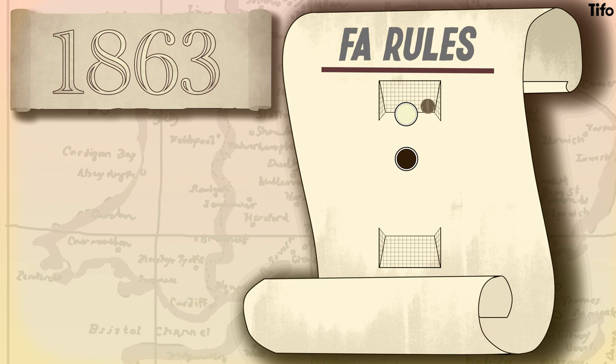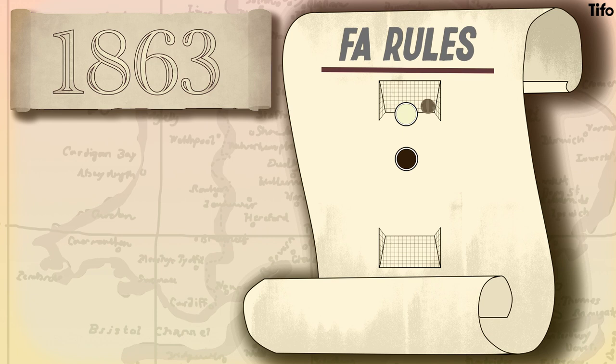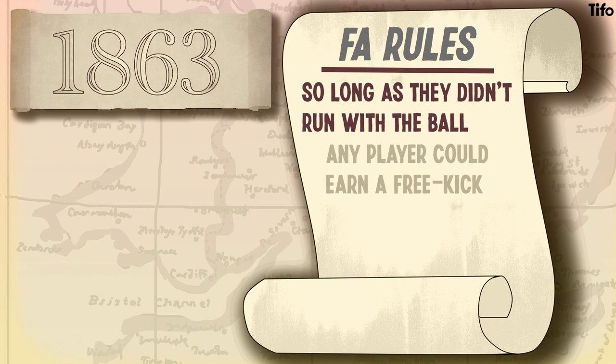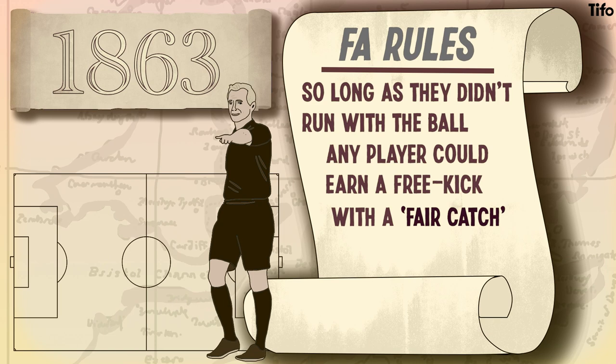The FA rules decreed that teams should change ends every time a goal was scored, and that, so long as they didn't run with the ball, a player could earn a free kick with a fair catch. But there was no mention of referees, or pitch markings, or the number of players. Nor would there be for over 30 years.